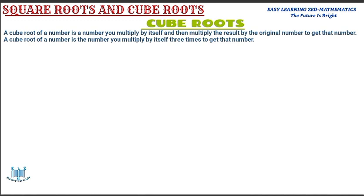For instance, I'm multiplying three by three by three to get 27 — I'm multiplying three, three times to get 27. Therefore, three is the cube root of 27. So I'm multiplying three by three, which gives me nine, then nine multiplied by three gives me 27.